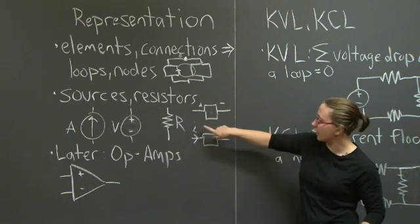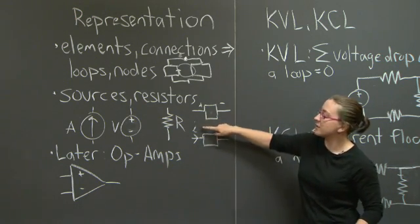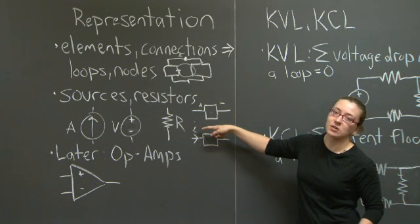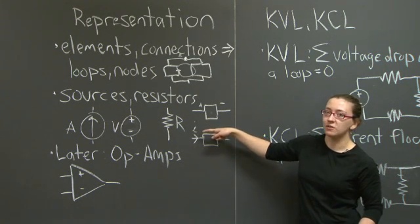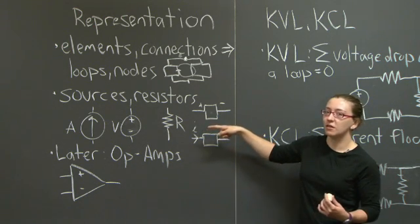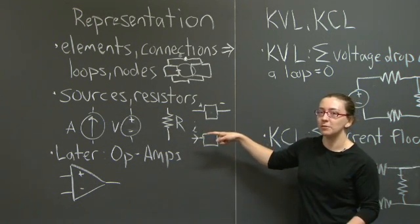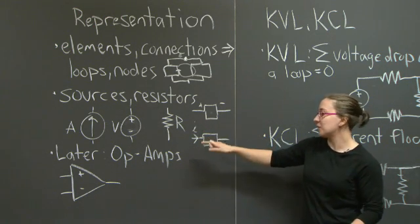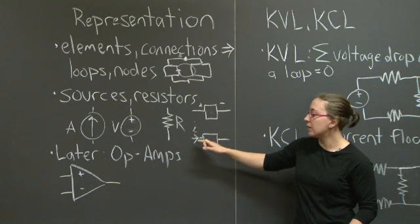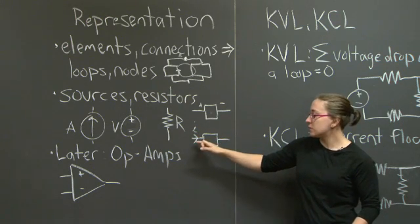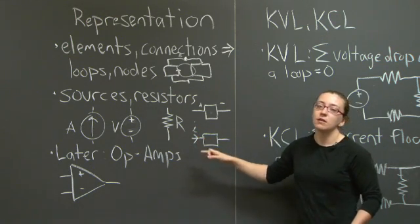A quick note: this is the reason that electrical engineers use j to symbolize values in the complex plane — it's because i is already used for values of current.